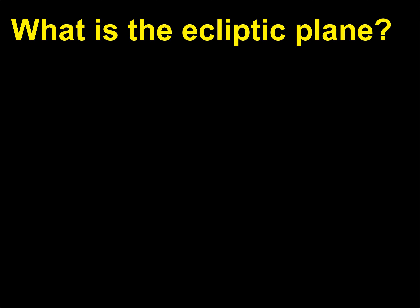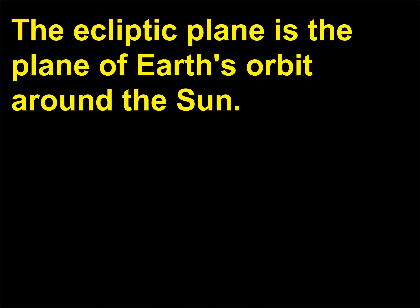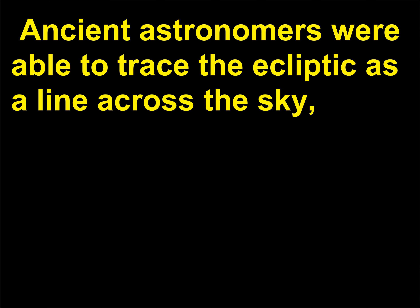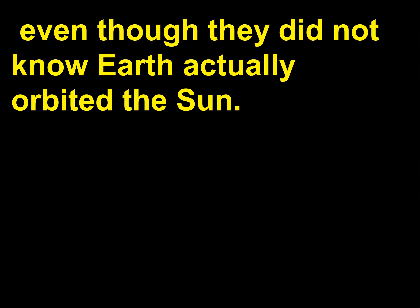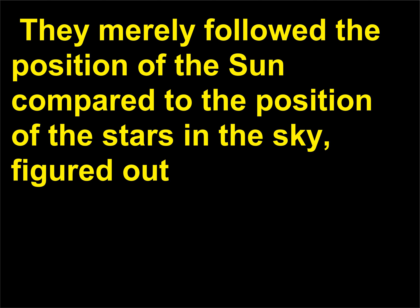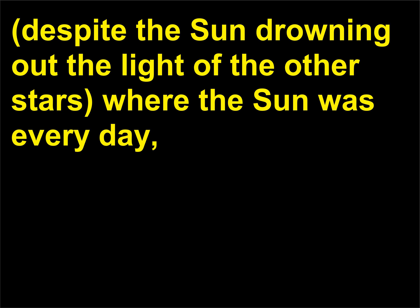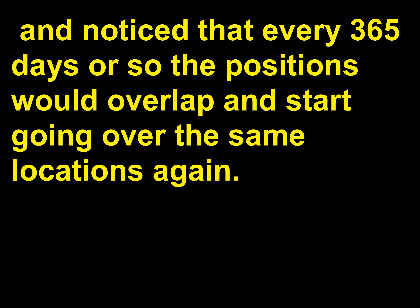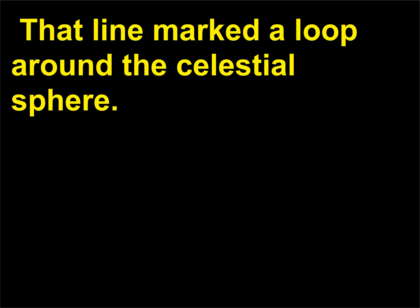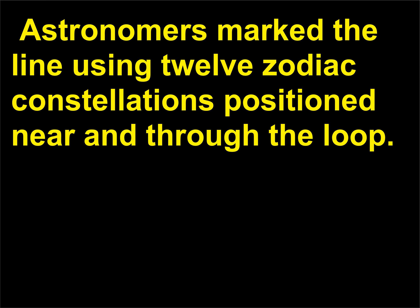What is the ecliptic plane? The ecliptic plane is the plane of Earth's orbit around the sun. Ancient astronomers were able to trace the ecliptic as a line across the sky, even though they did not know Earth actually orbited the sun. They merely followed the position of the sun compared to the position of the stars in the sky and noticed that every 365 days or so the positions would overlap and start going over the same locations again. That line marked a loop around a celestial sphere. Astronomers marked the line using 12 zodiac constellations positioned near and through the loop.